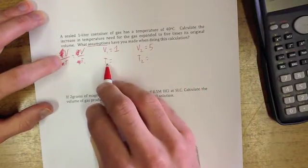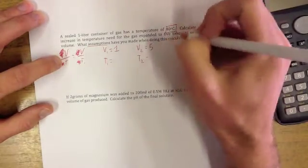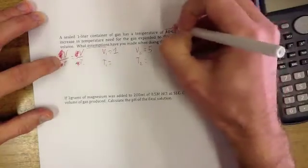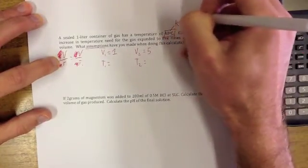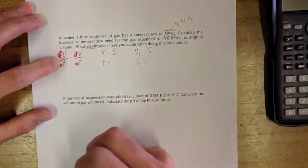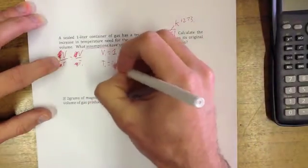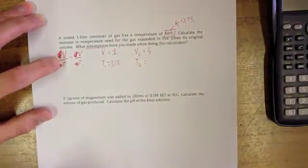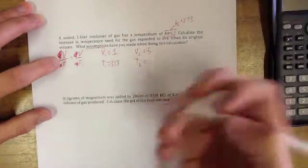Our temperature, first temperature is 40 degrees Celsius. Now as you know, Celsius, we don't want Celsius. We want to convert this into Kelvin. To do that we add 273 degrees Kelvin to it, so our first temperature is going to be 313 degrees Kelvin, or just 313 Kelvin because Kelvin is technically not in degrees.